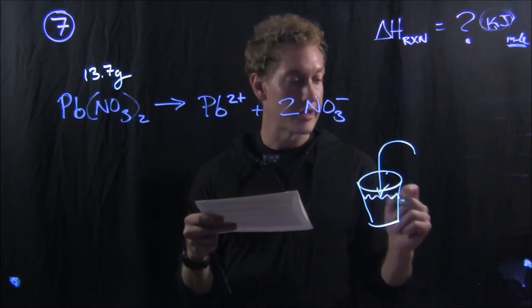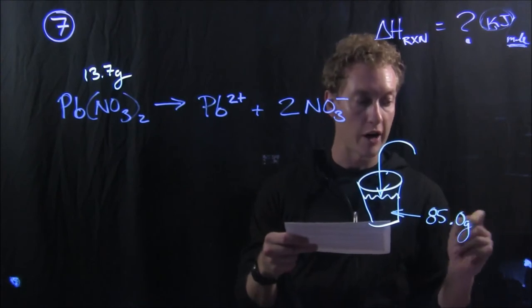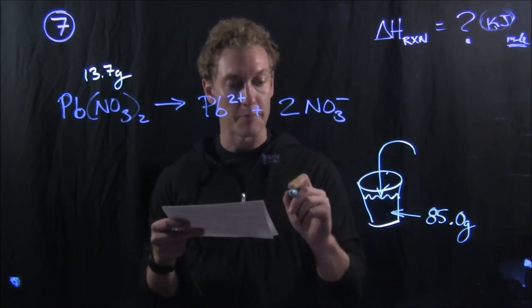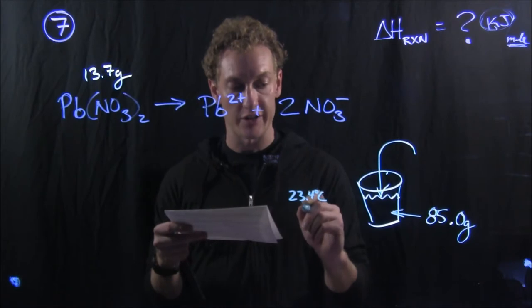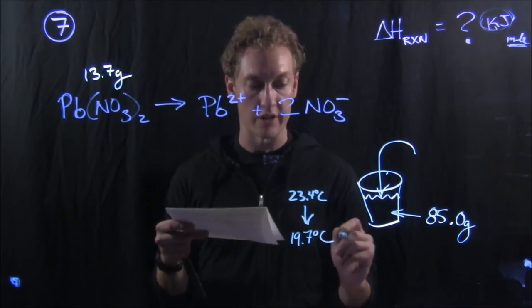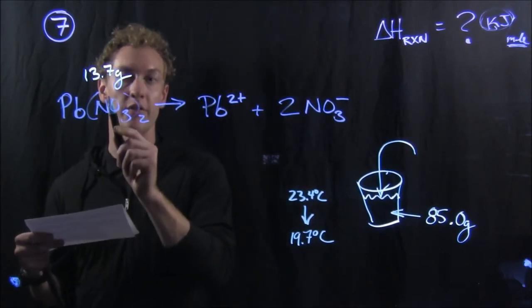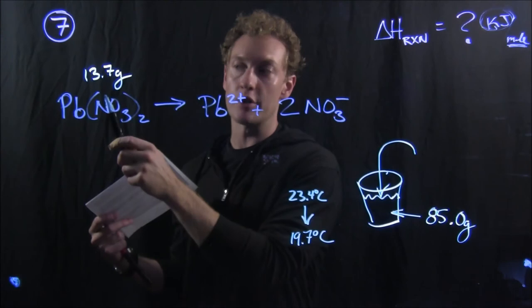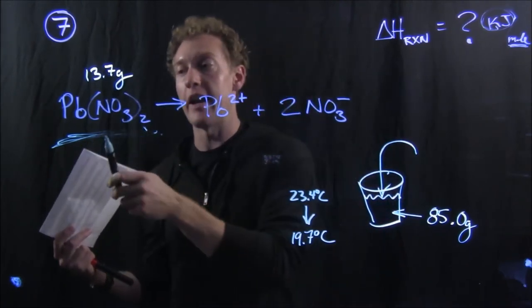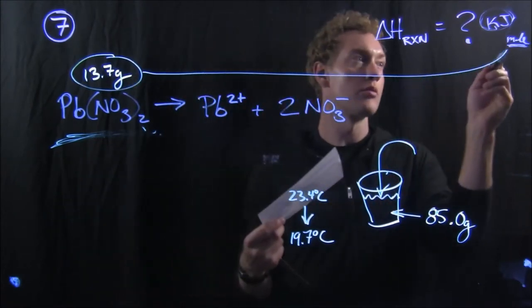In this reaction, it says that the water inside of there - the mass of that water, there's 85.0 grams of water, and while the reaction occurs, the water drops from 23.4 degrees Celsius down to 19.7 degrees Celsius. So we know that we react 13.7 grams of lead two nitrate. Since it's a decomposition or dissociation reaction, there's only one reactant, so that has to be our limiting reactant. So my 13.7 grams, I am going to convert to moles.